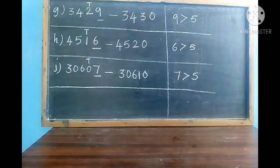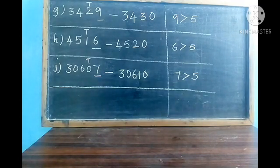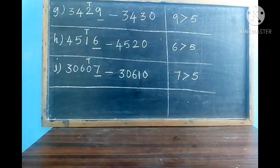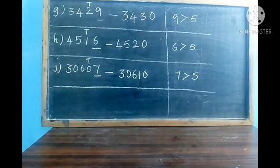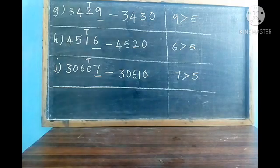Next, G division: the number is 3429. Underline the ones digit and write T above the tens digit. 9 is at the ones place — 9 is greater than 5. So we write 3 as it is, 4 as it is. As 9 is greater than 5, the next 10 of 2 is 3, so in the tens place we write 3 and the ones place becomes 0. The answer is 3430.